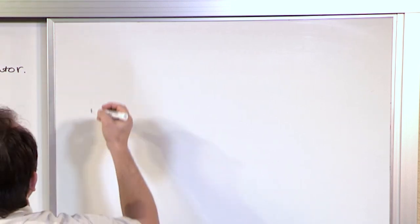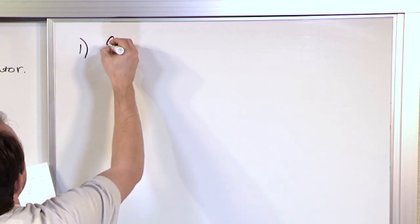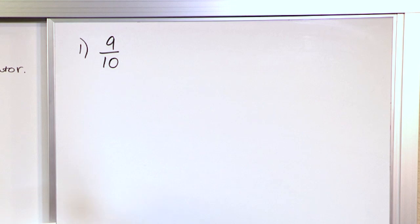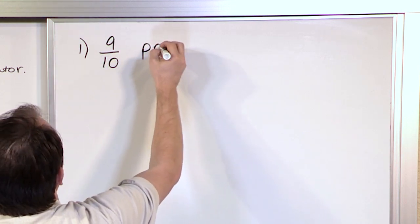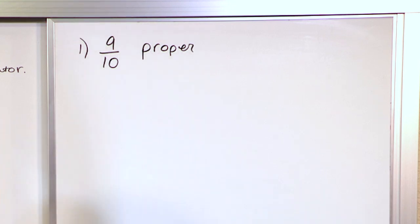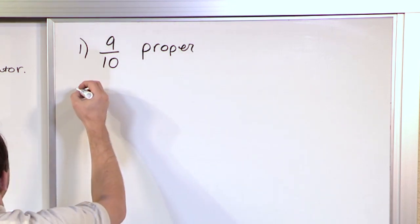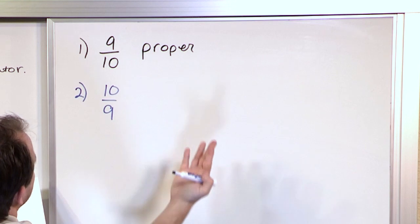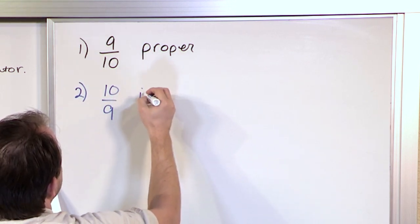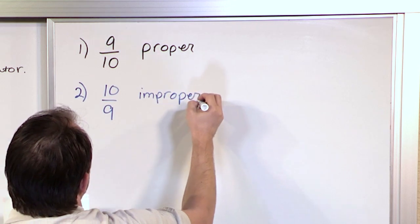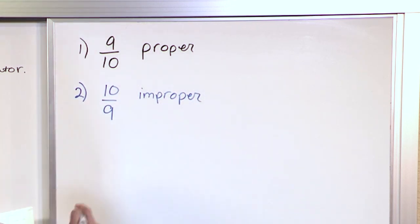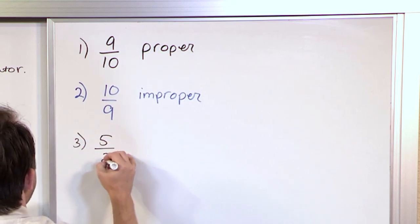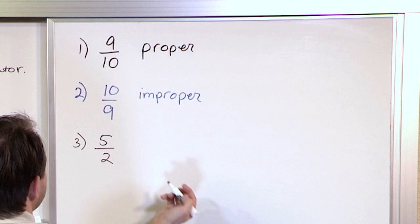Let's get some rapid-fire practice identifying if a fraction is proper or improper. Nine-tenths: the top number is smaller, so this is proper. Ten-ninths: ten out of nine pieces means I have more than one of something, and because the top number is bigger, this is improper. Five halves — five over two: the top number is bigger, so this is improper. Once you get the hang of it, it's pretty easy.